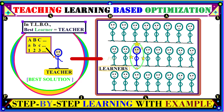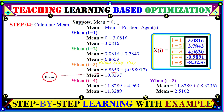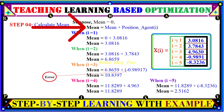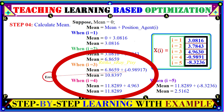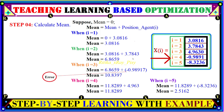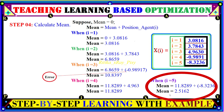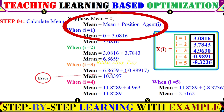Next we calculate the mean result. We initialize the mean value as zero, then add each learner's position to it. For the first learner, mean equals zero plus the first learner's position. For the second learner, we add the second learner's position, and so on. There is a slight error in the example for the third learner — the fourth learner's position is added instead of the third. You can correct this by adding the correct learner's position at each step to finally obtain the mean result.